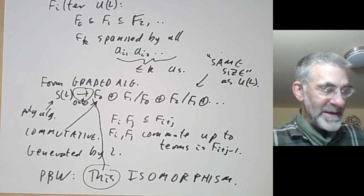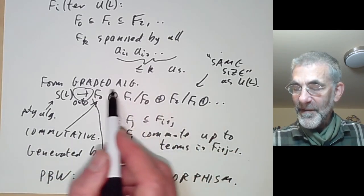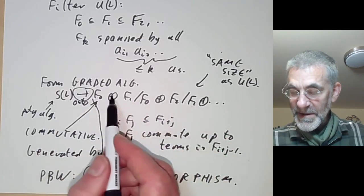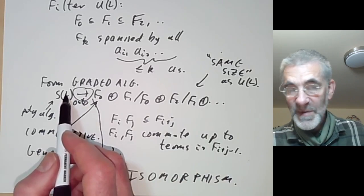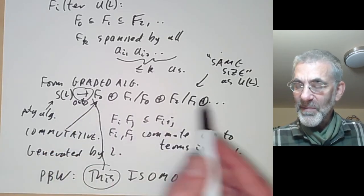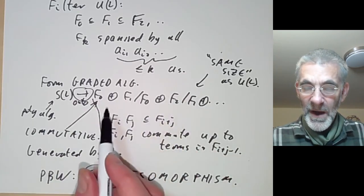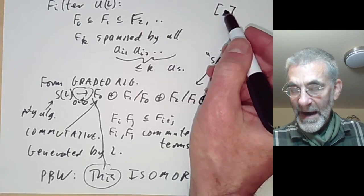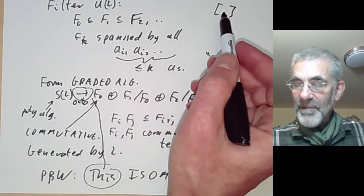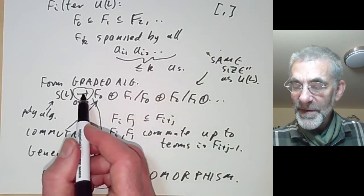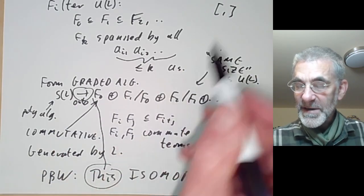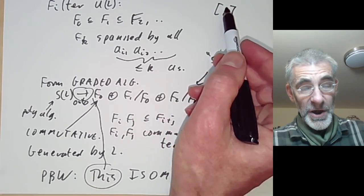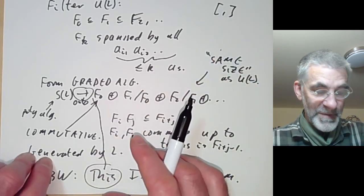We've proved the easy half of the PBW theorem — the upper bound — by showing there's a surjective map from the polynomial algebra onto this graded algebra. What remains is to find a lower bound, to show it's actually the same size. For all we know, this algebra could collapse completely. The proof that this is an isomorphism needs to use the fact that the bracket on a Lie algebra is anti-symmetric and satisfies the Jacobi identity. Without these, the map generally collapses.